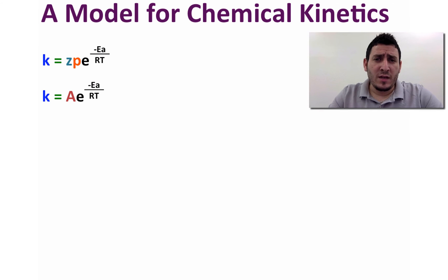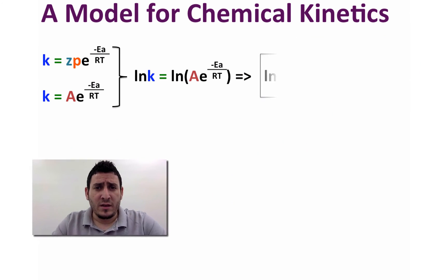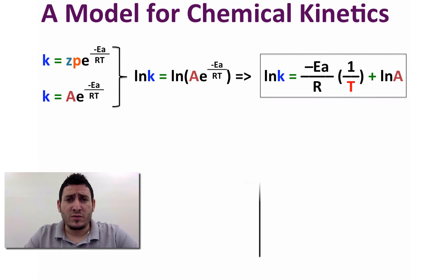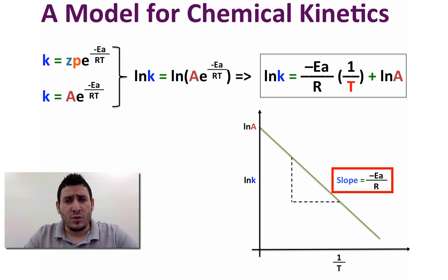Taking the natural log of both sides we get ln of k equals minus Ea over R times 1 over T plus ln of A. The plot of ln k versus 1 over T gives a straight descending line where the slope is equal to minus Ea over R.